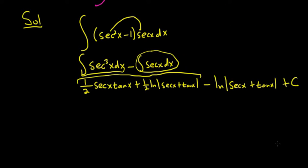All right, good stuff. So there's really a 2 over 2 here, right? You want to combine these. So 1 half natural log absolute value of secant plus tangent minus 2 over 2 natural log absolute value of secant plus tangent. That's going to give you a negative 1 half.